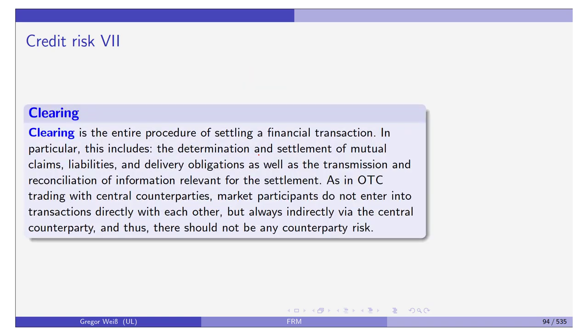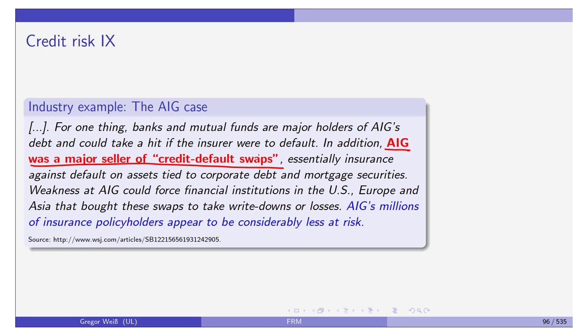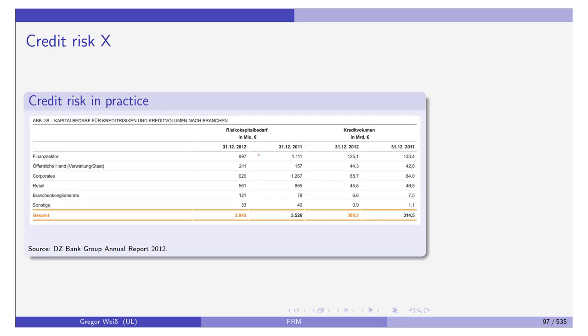Clearing is the entire procedure of settling a financial transaction — including the determination and settlement of mutual claims, liabilities, delivery obligations, and the transmission of relevant information. With a central counterparty, market participants do not transact directly with each other but always indirectly via the central counterparty, such as an exchange or clearing company, and thus there should not be any counterparty risk. This addresses the kind of systemic risk seen in the AIG case.